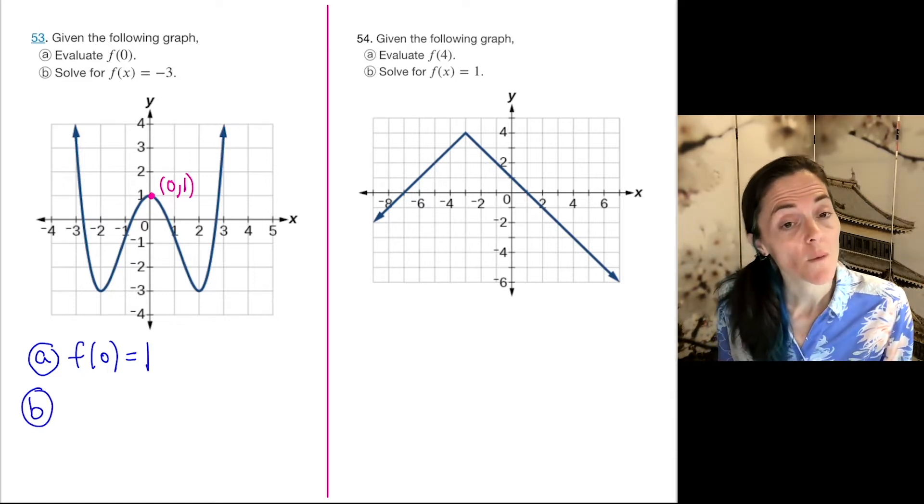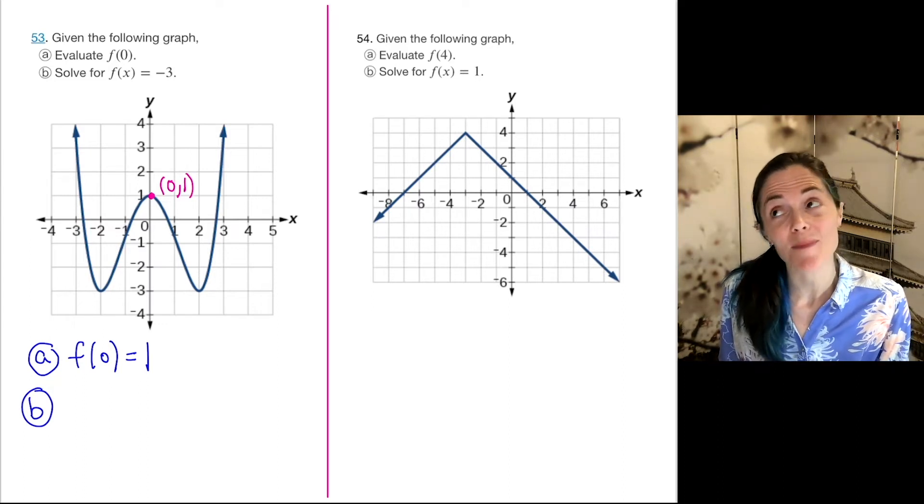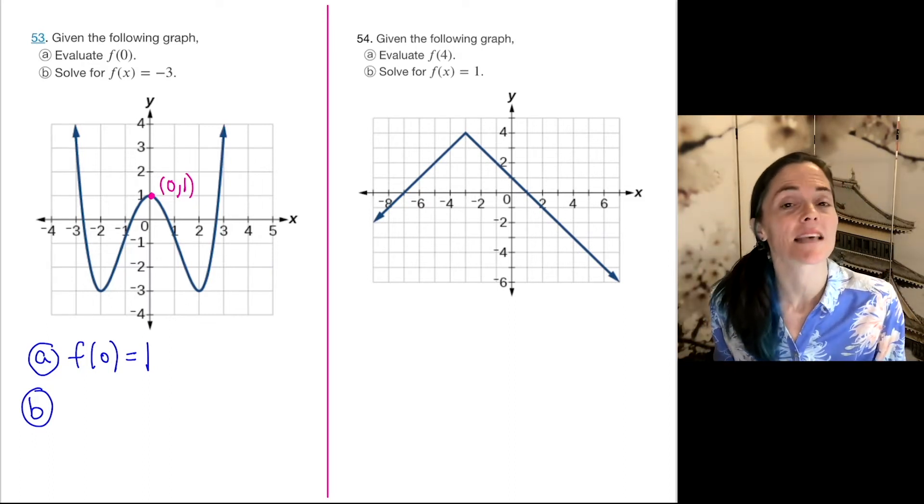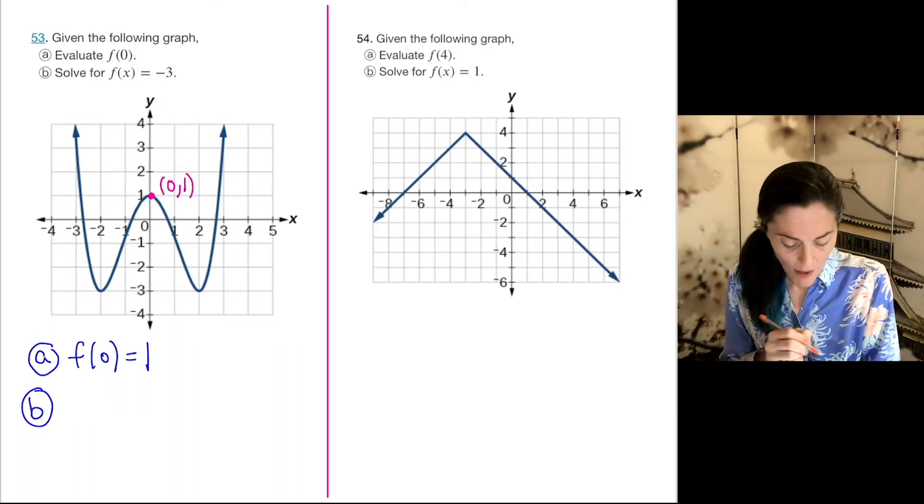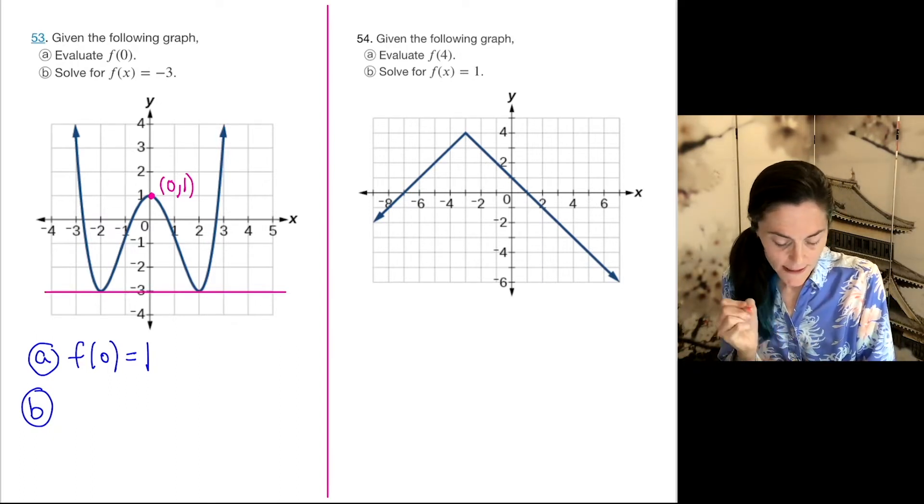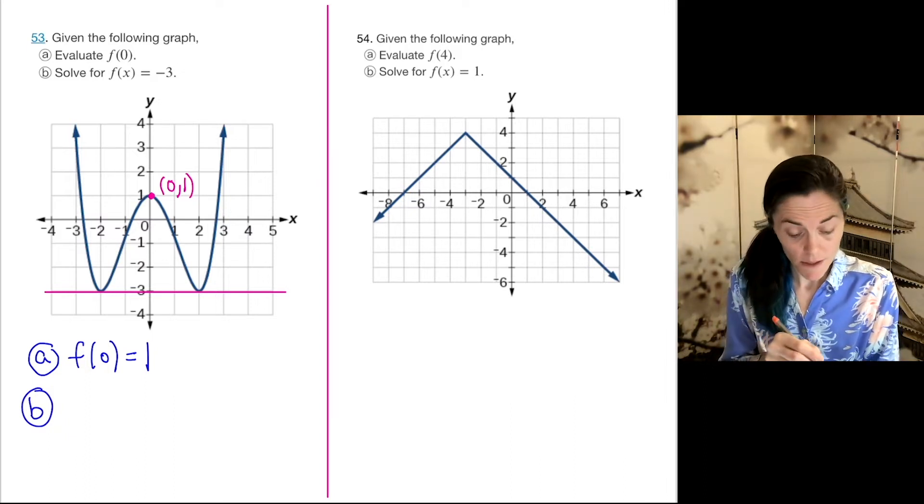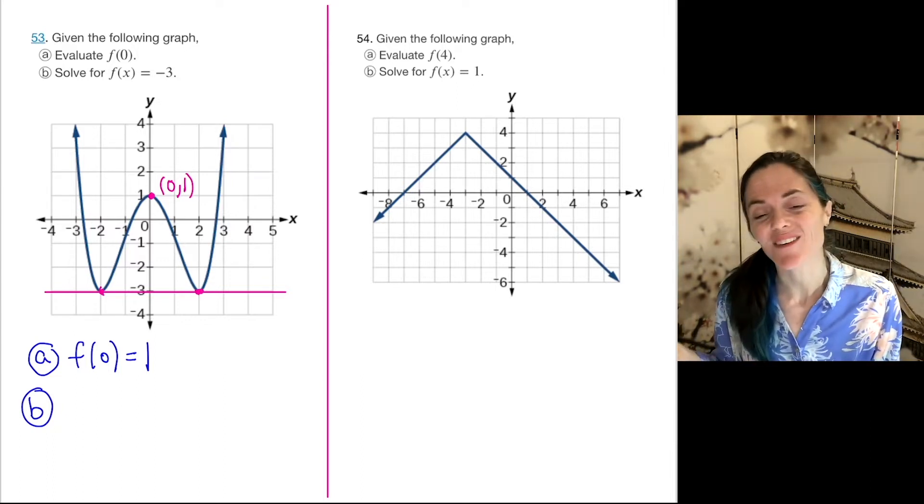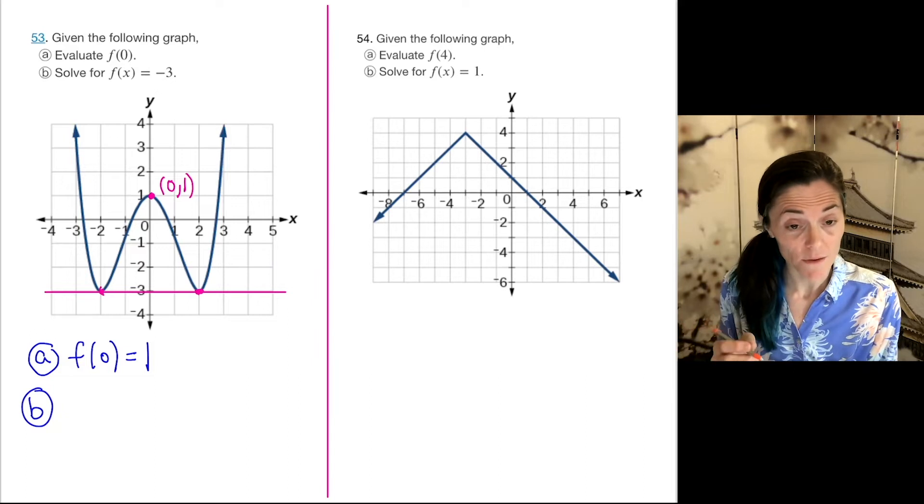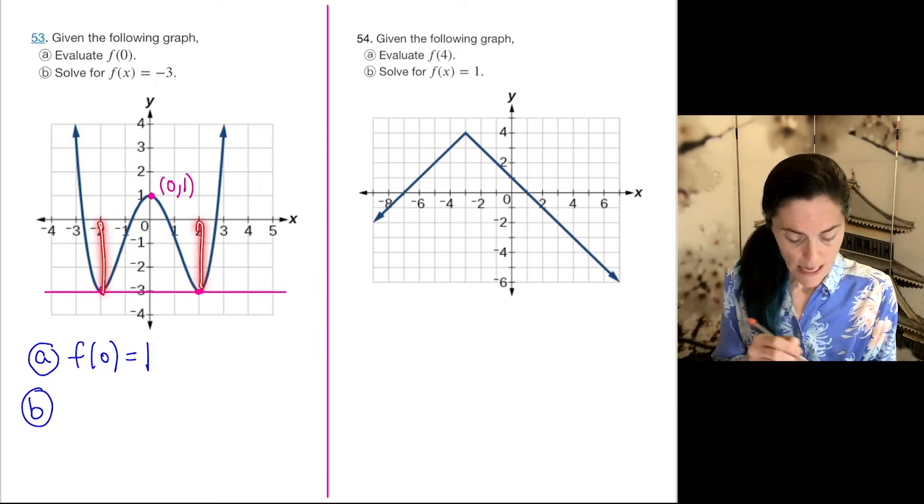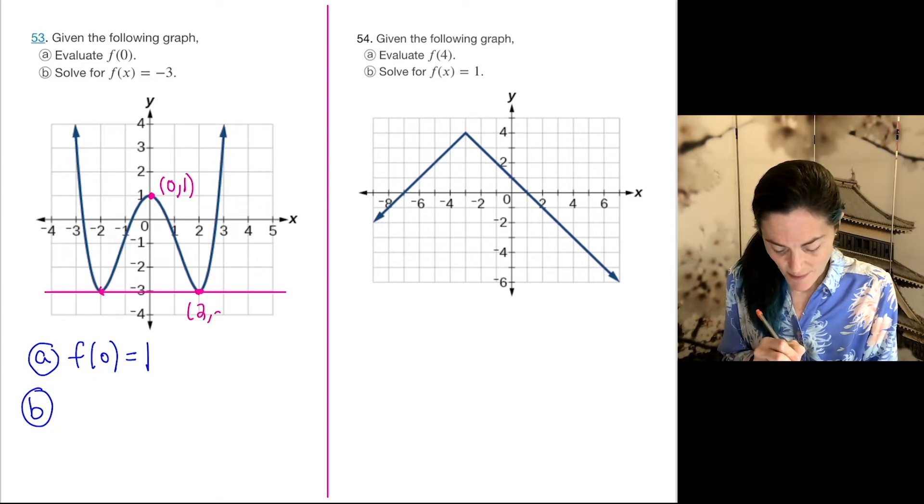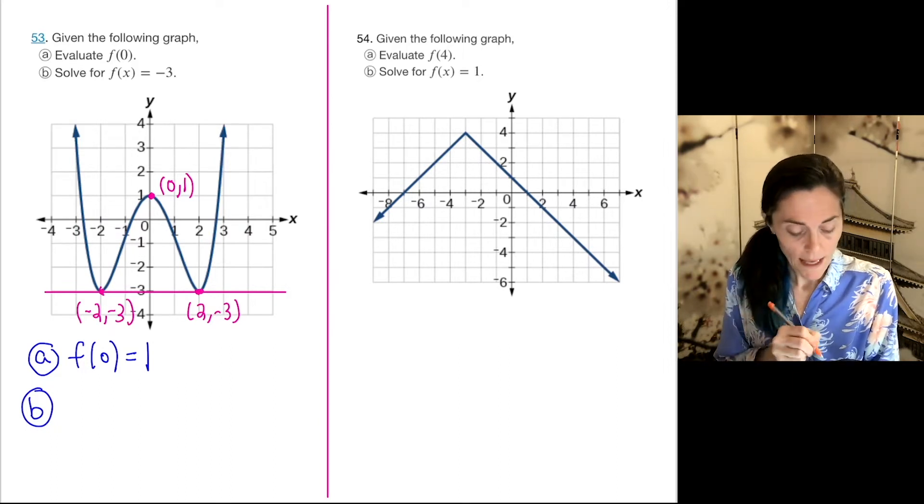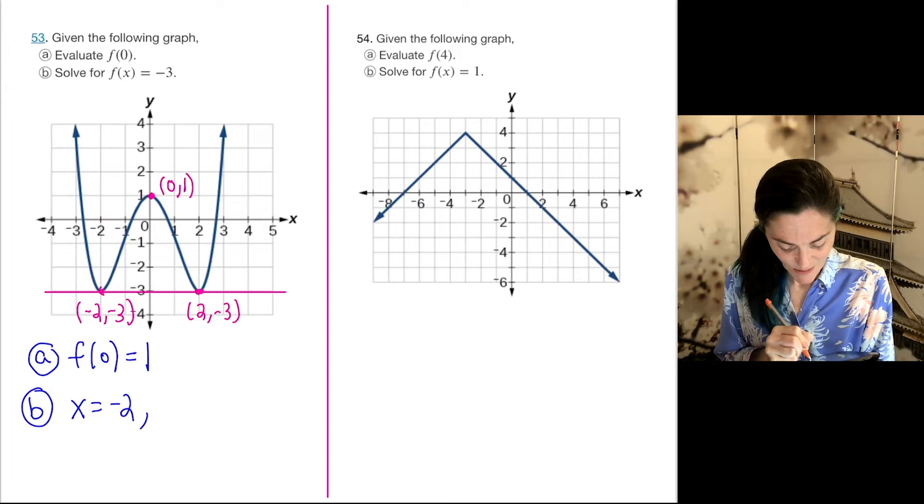Now we move on to letter b. We want to solve f(x) equals negative 3. Now remember what we did in the last two. We set the function equal to that value and solve for x. Graphically, we're looking at y equals minus 3, which is here. And then we want the x values. And you see there are two x values, two points on the graph where y equals negative 3. And so there's two x values. You can see them just moving up here. Maybe I'll put the points on the graph. This is 2 comma negative 3, and this is minus 2 comma negative 3. So my answer in letter b is negative 2 and 2.